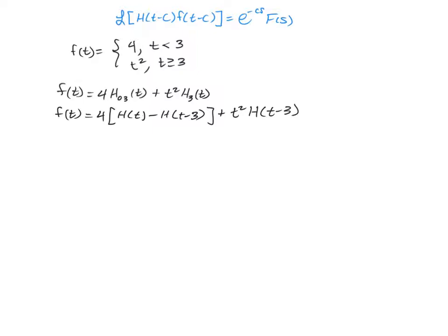When we first multiply and distribute this out, you will notice that the first two terms we could actually take their Laplace transform now if we wanted to. We're going to wait until later though. And then back here, we cannot take the Laplace transform of t squared h(t-3) because we don't have matching t's. One is t minus 0 or just plain t. The other is t minus 3.